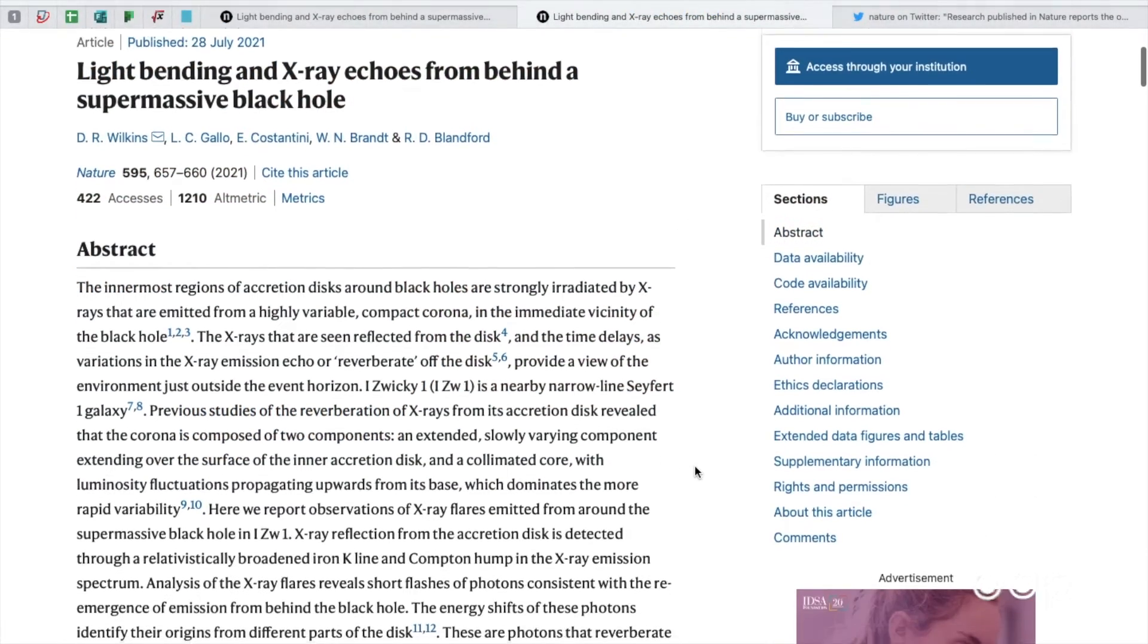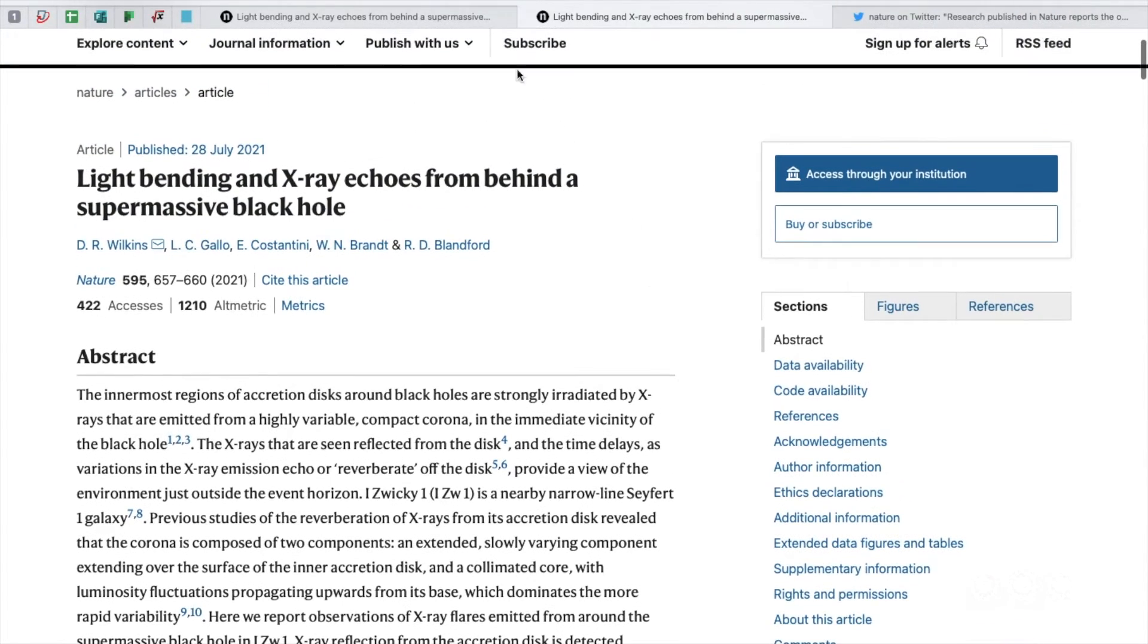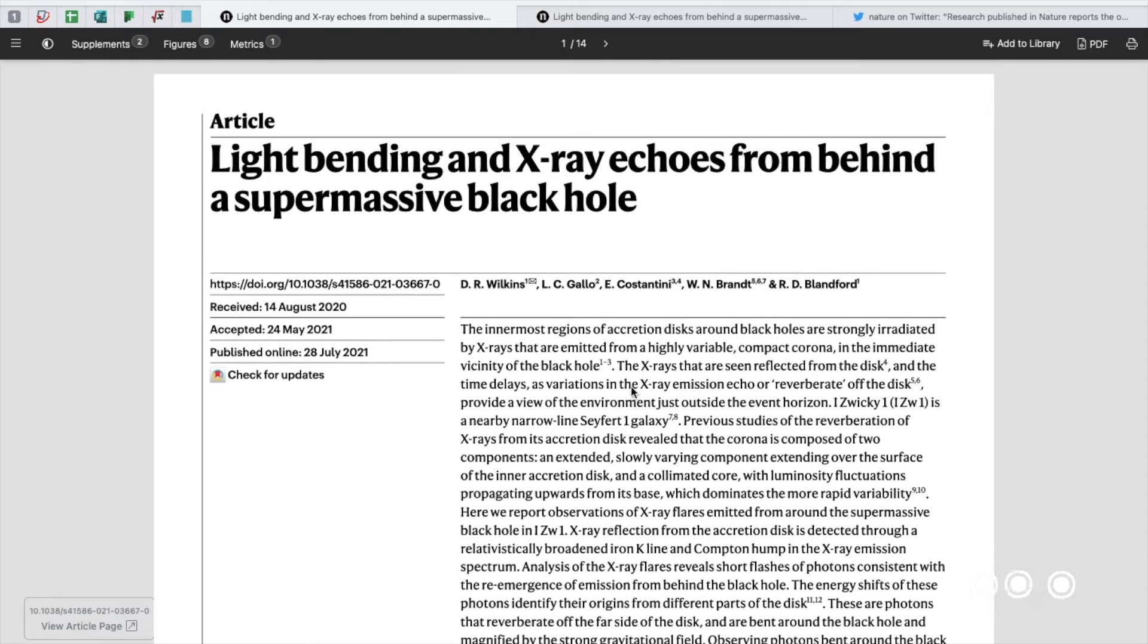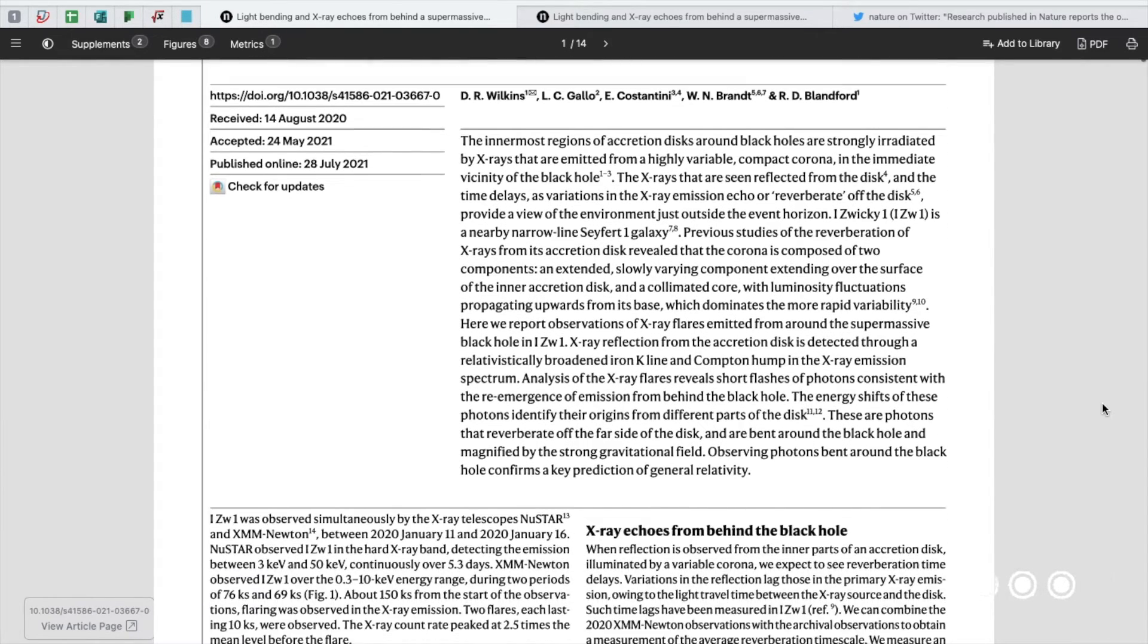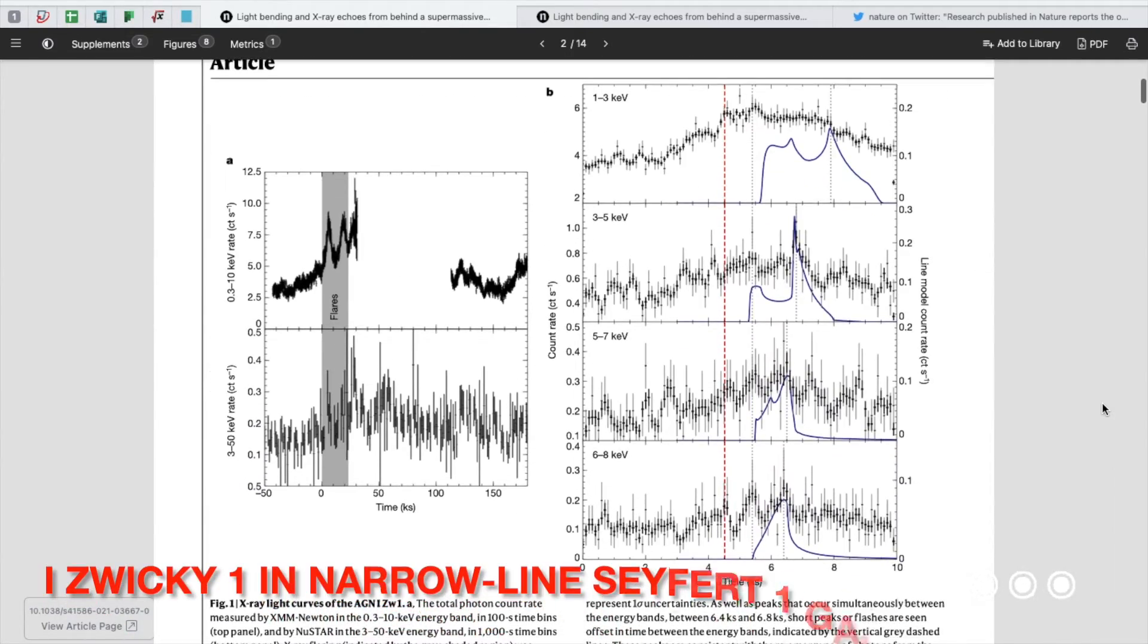The paper, published in Nature on July 28th, provides evidence for Einstein's theory of general relativity. The researchers studied a supermassive black hole called I Zwicky 1 in the narrow-line Seyfert 1 galaxy.